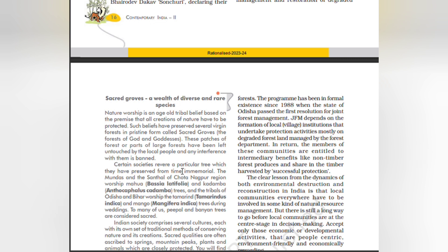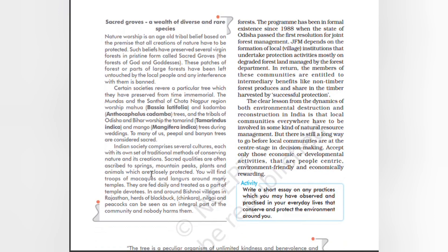Certain societies revere particular trees which they have preserved from time immemorial. The Mundas and the Santhals of the Chota Nagpur region worship Mahua (Bassia latifolia) and Kadamba (Anthocephalus kadamba) trees, and the tribals of Odisha and Bihar worship the Tamarind (Tamarindus indica) and Mango (Mangifera indica) trees during weddings.